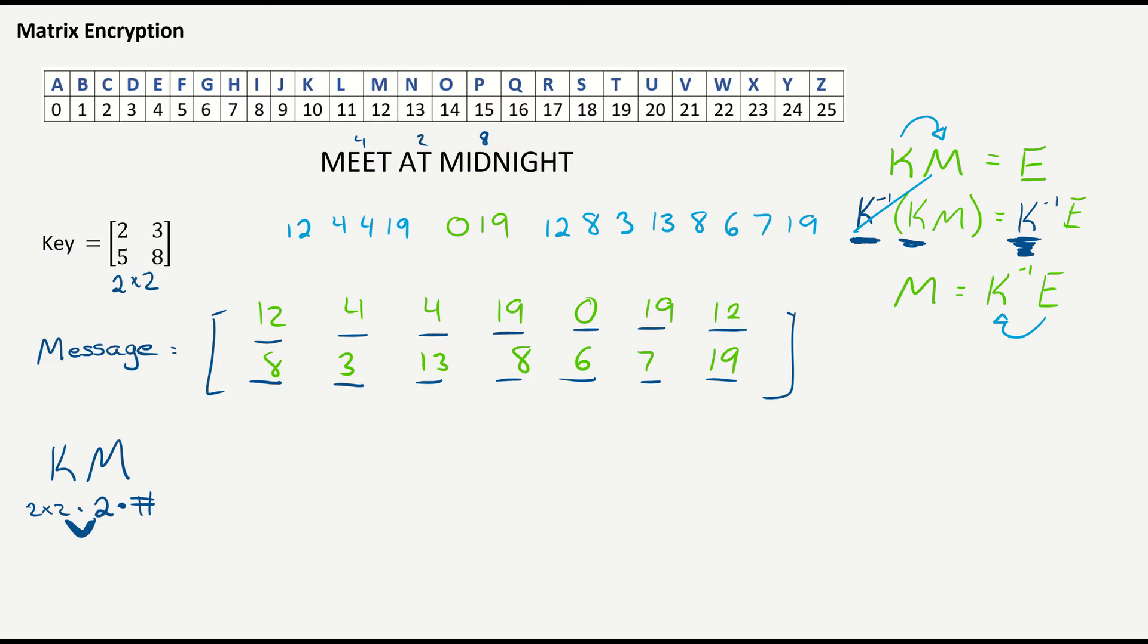Now, what if my message was meet at midnights? I don't know what the plural of midnight means, but what if I had this extra 18 at the end? Now all of a sudden, I don't fill in the columns exactly. So let's just say my S is up there, and I have this blank here. I can't just leave it blank in the matrix. I don't want to put a zero, because a zero stands for A. I just need a blank space.